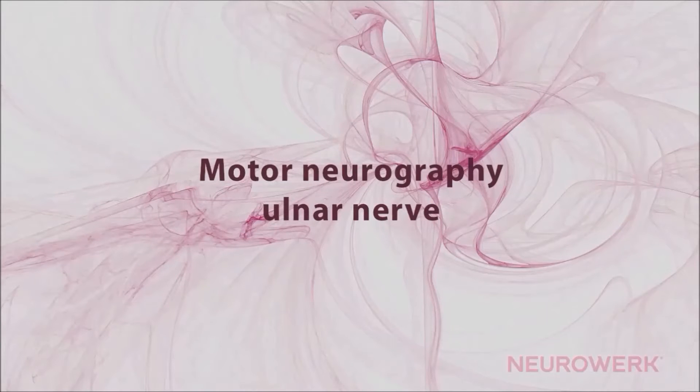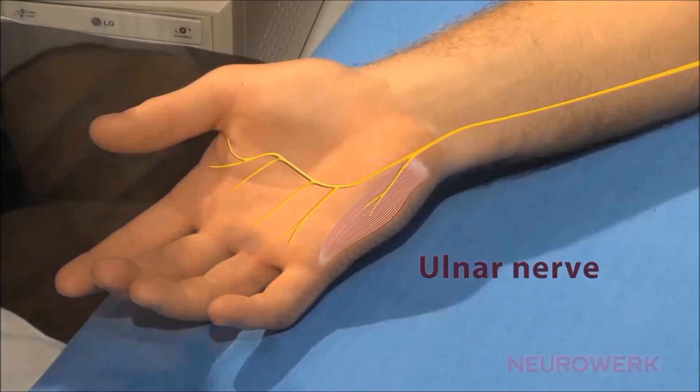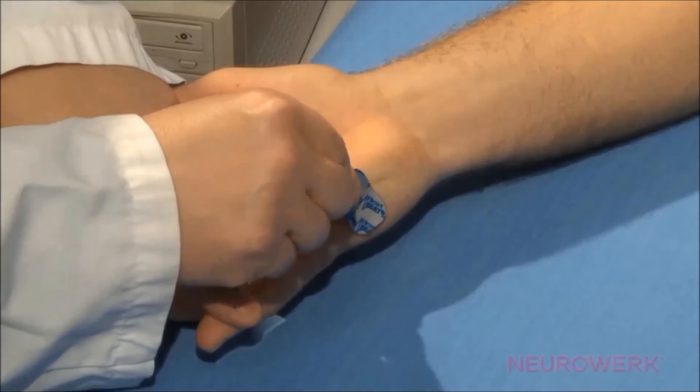Motor neurography of the ulnar nerve. On the motor ulnar neurography, the different or active electrode is positioned above the venter of the muscle of the hypothenar, this is the so-called abductor digiti minimi muscle.